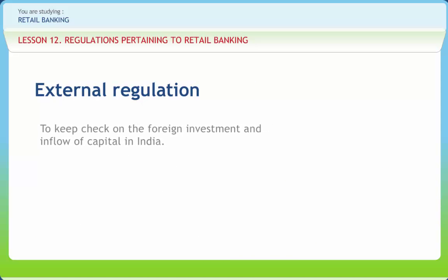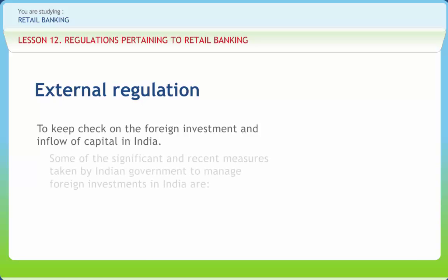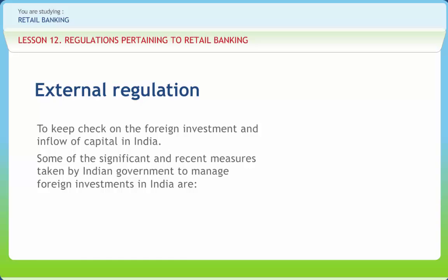Foreign capital flows help fill the resource gap in India, where domestic savings are insufficient to finance investment. India needs capital in the form of ECBs and other foreign loans and aids. Keeping in view growing requirements, the Indian government has come up with many policies and liberalized regulations to manage foreign capital. Significant measures include Foreign Direct Investment, which is permitted under the automatic route in all sectors up to sectoral caps, except where investment is prohibited. An Indian company issuing shares to a person resident outside India can receive such amounts in advance.